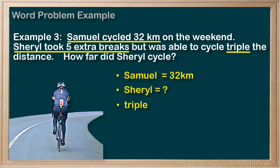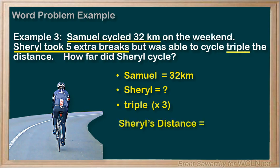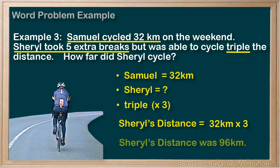Step 3: Strategize and solve. Triple — we remember that triple is a term indicating times by three. So we can figure out Cheryl's distance as Samuel's distance, or 32 kilometers, times 3. 32 times 3 equals 96 kilometers. So that might be Cheryl's distance.